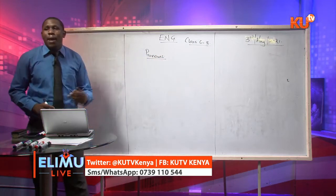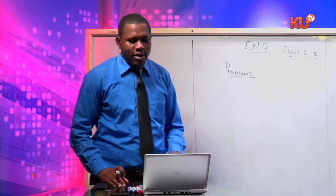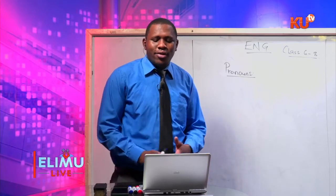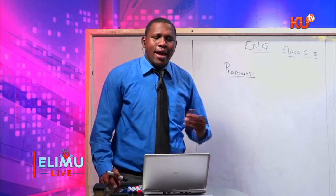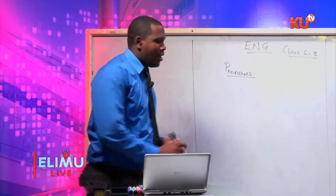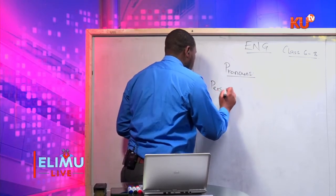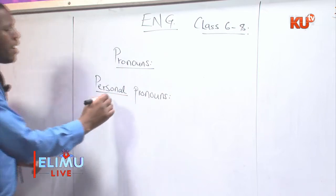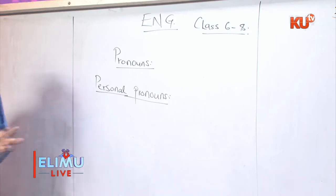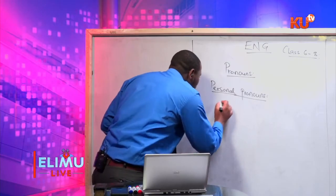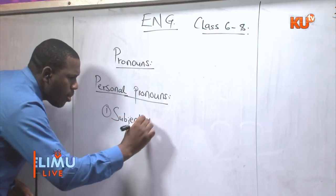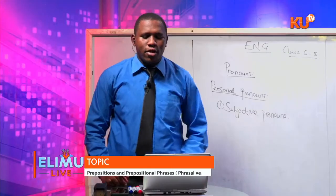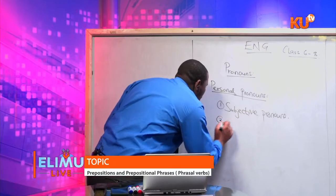And that is where I will start. Remember, a pronoun is a word that comes in place of a noun or a noun phrase. They refer to nouns that have already been mentioned or those that need not be mentioned at all in a sentence. For the personal pronouns, they are grouped into two: the subjective pronouns and the objective pronouns.